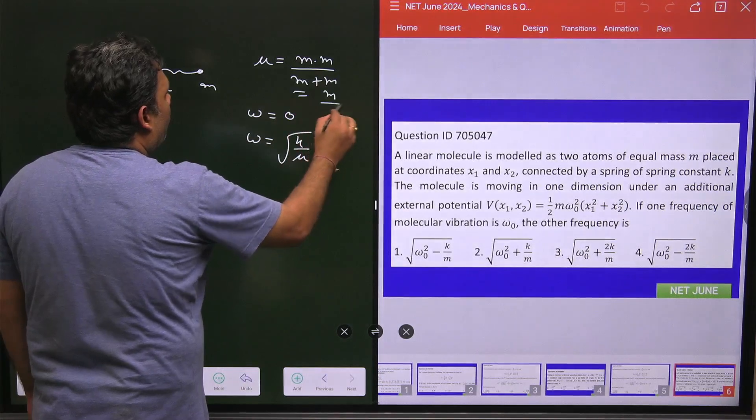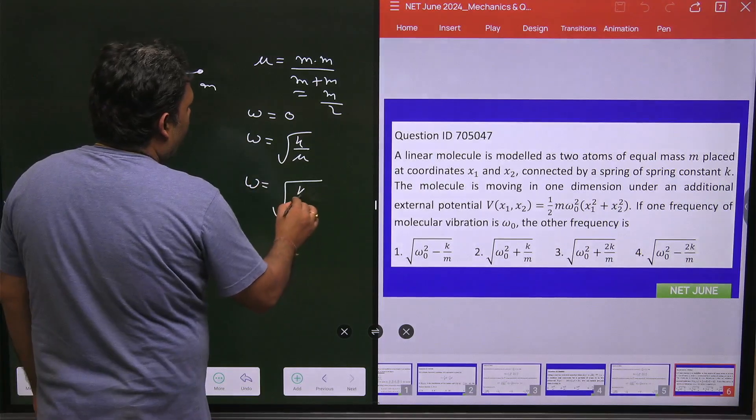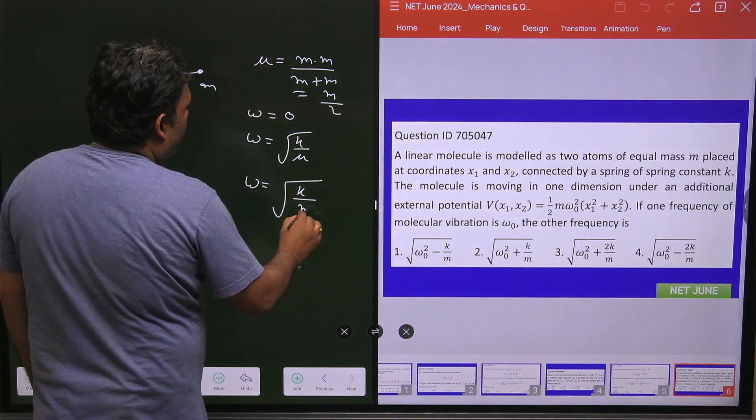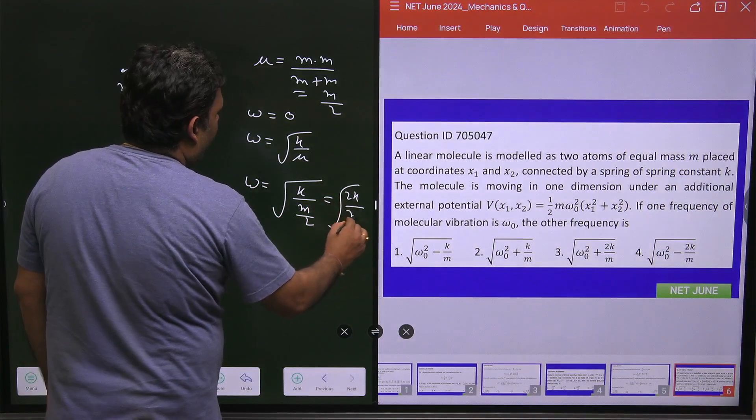That value is M/2. And what will be your ω? Your ω equals √(K/(M/2)) = √(2K/M).